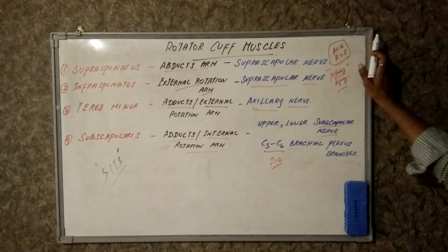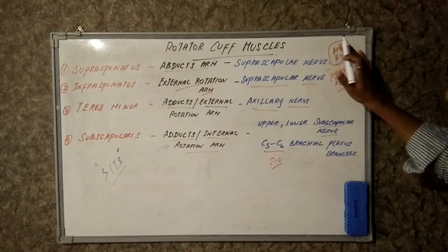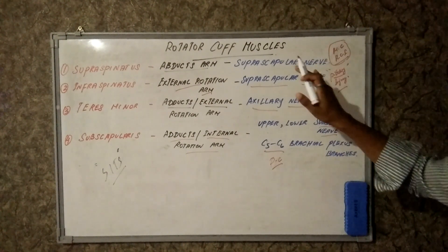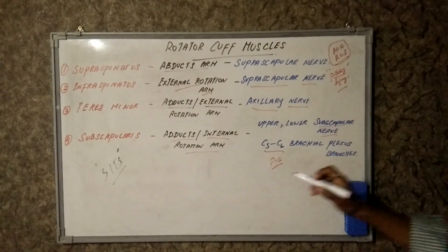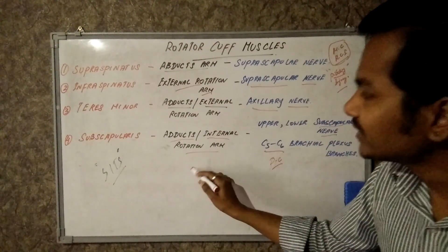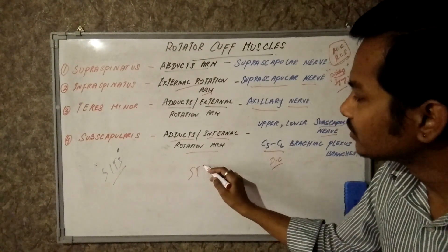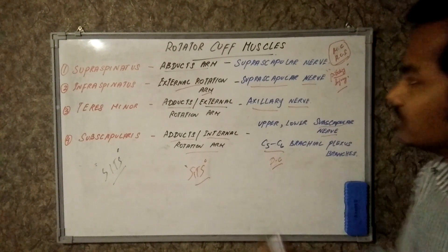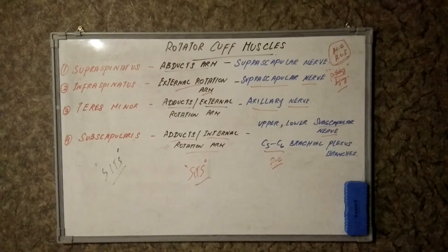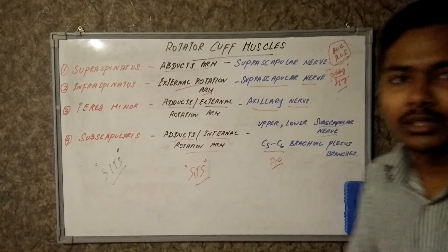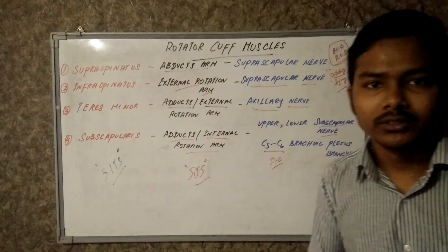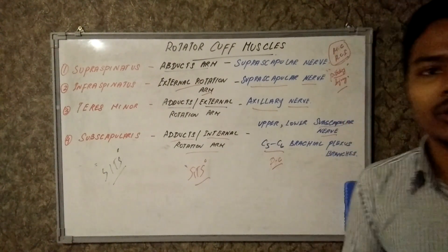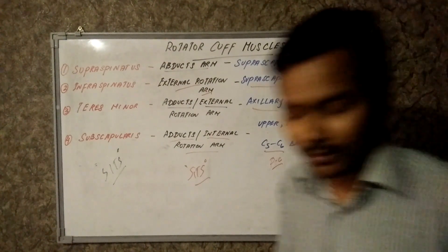To summarize: supraspinatus, infraspinatus, teres minor, subscapularis — the most common rotator cuff injury is the supraspinatus muscle, and the pitching injury involves the infraspinatus. We call it the SIPS mnemonic. Thanks for watching; we'll continue with other topics in future videos.